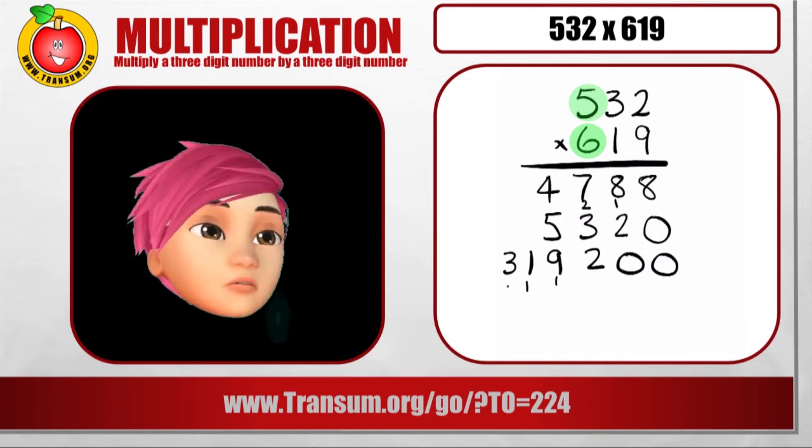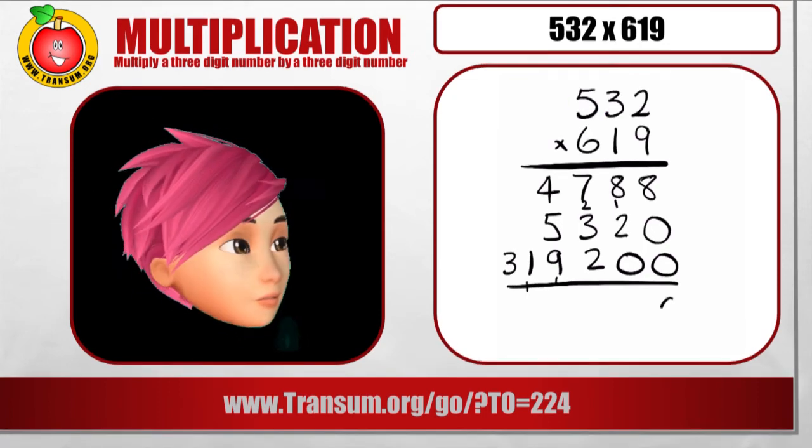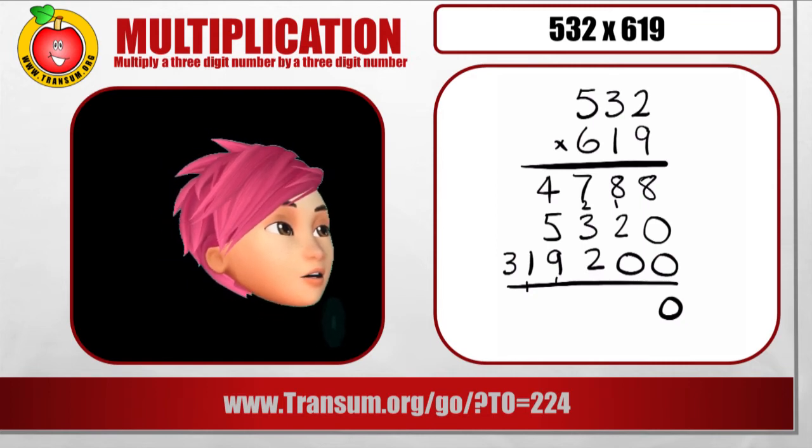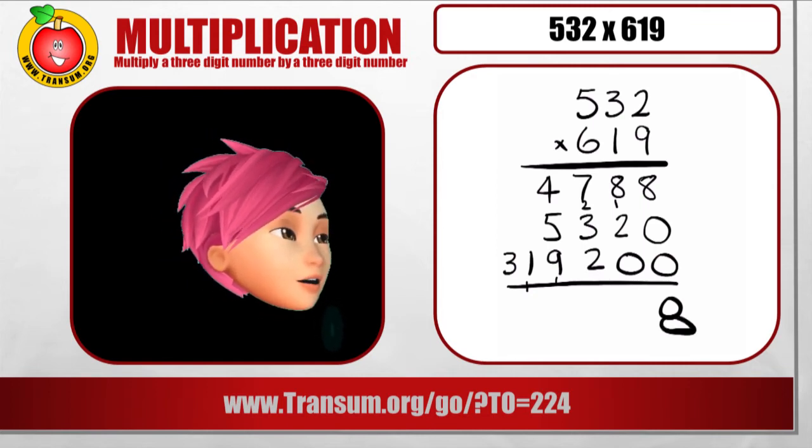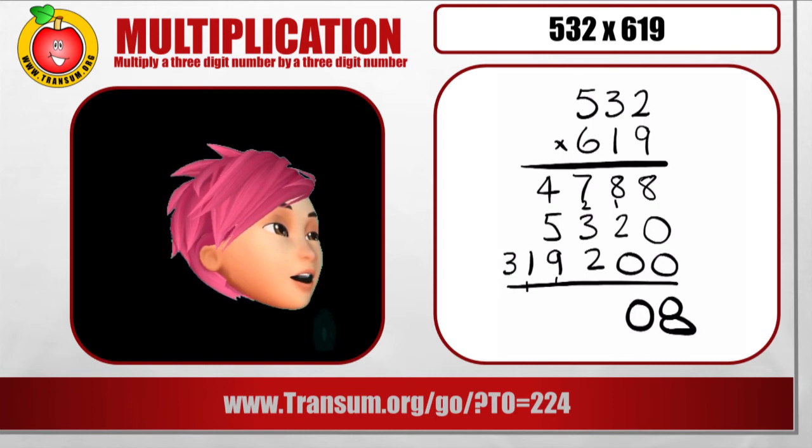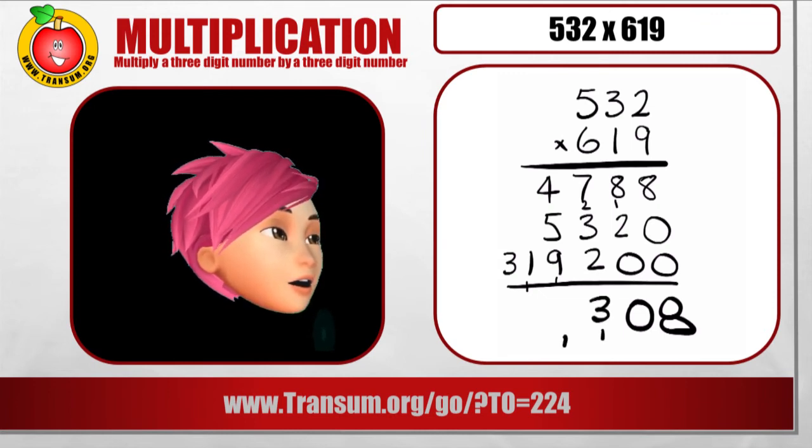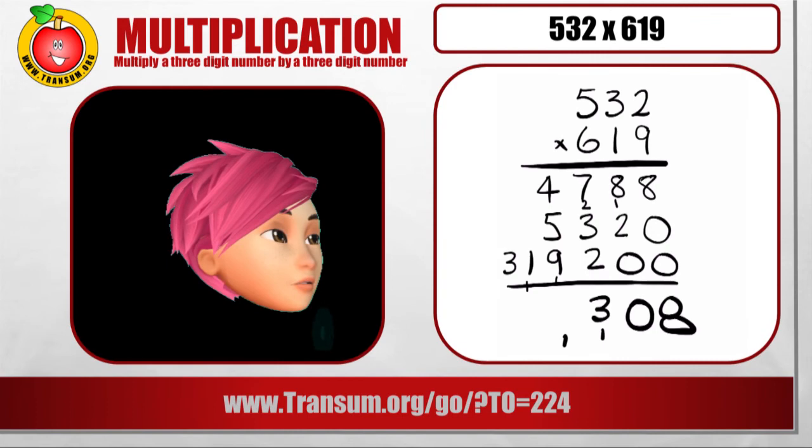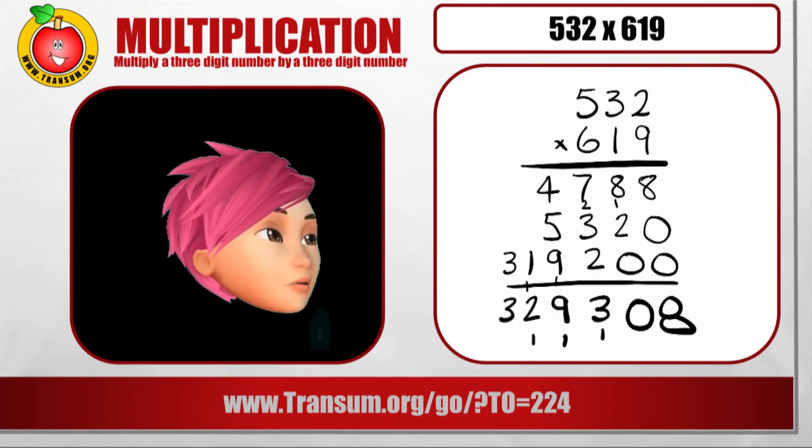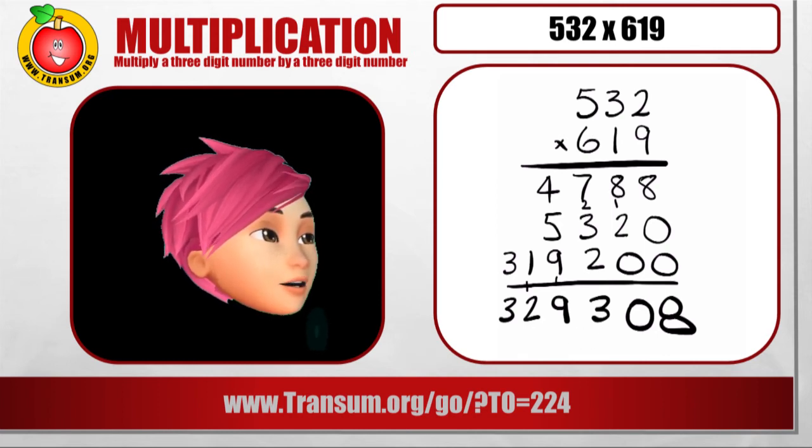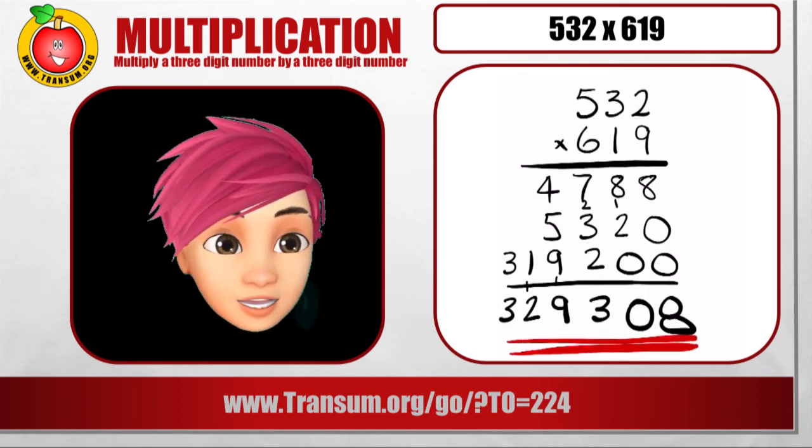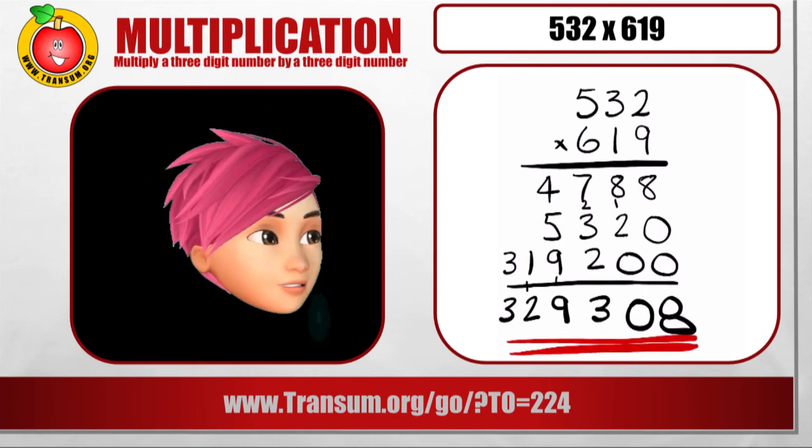And then we have a big adding up operation to do. So adding up the 1's column we get an 8. Well that's a bit of a messy 8. And then we get 10. Carry the 1. Add the 7, the 3, the 2, and the 1. And then carry over to the next column. The 1 and the 9, 10, 14, 19. Carry the 1, 2, and a 3. What a big answer. 329,308. Wow.